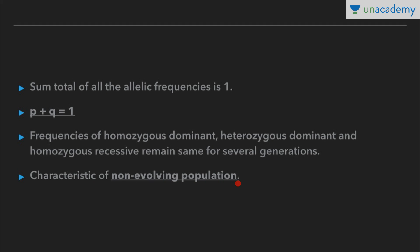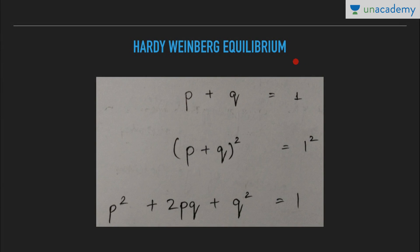Hardy-Weinberg law is an ideal given for non-evolving populations. The Hardy-Weinberg equilibrium is expressed as P plus Q equals 1. Squaring both sides gives the binomial expansion: P squared plus 2PQ plus Q squared equals 1, where P squared is the frequency of homozygous dominant individuals, 2PQ is the frequency of heterozygous dominant, and Q squared is the frequency of homozygous recessive.